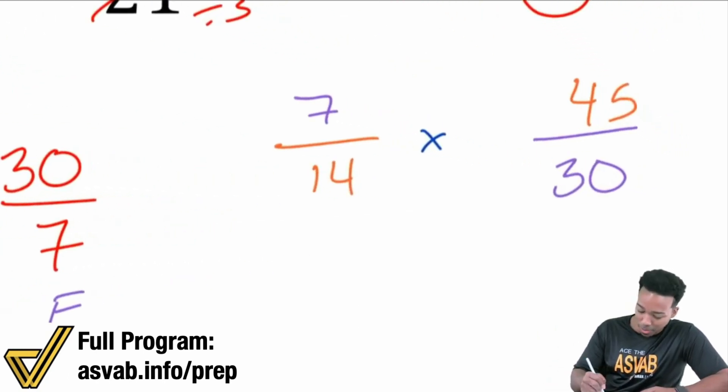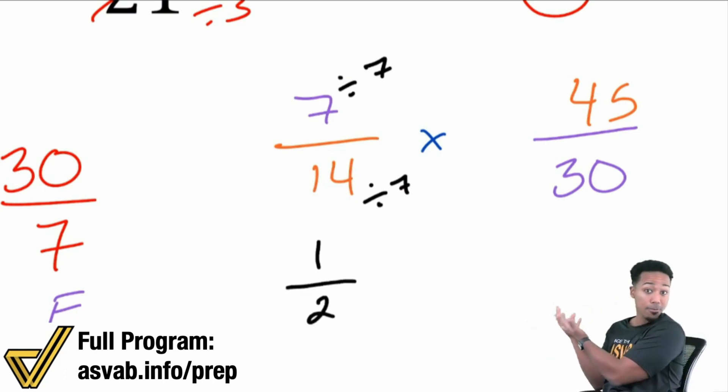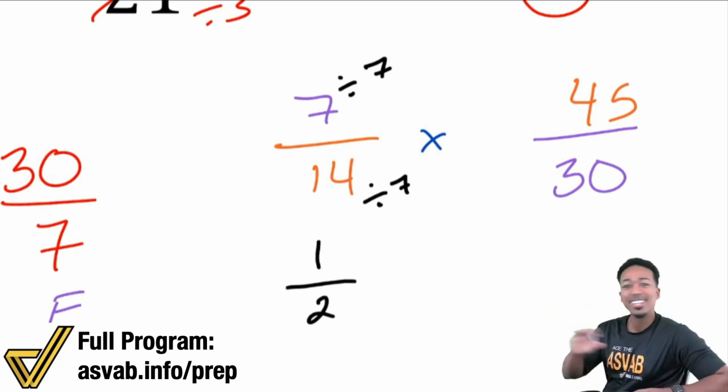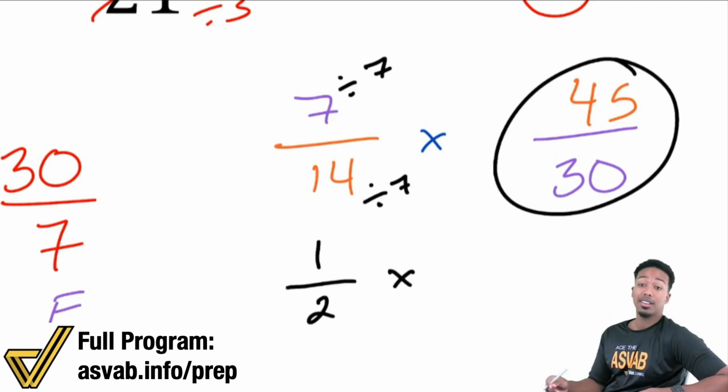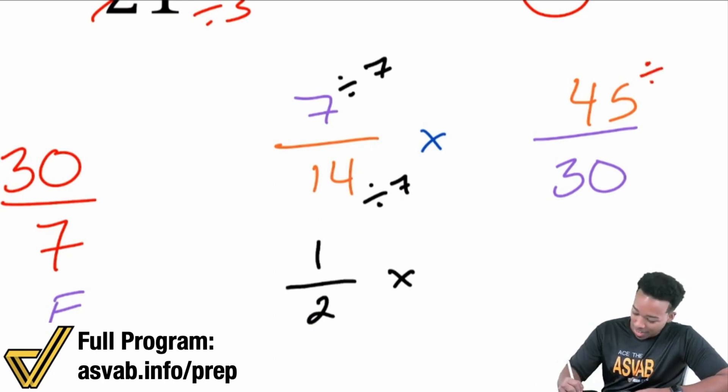So we're going to have 7 over 14. What is that going to simplify to? Remember that they're both divisible by 7. They're both divisible by 7, giving us 7 divided by 7 is 1. 14 divided by 7 is 2. And that's true because 7 is half of 14. So that's really nice right there. Super easy. Then we're multiplying that with what? 45 divided by 30. Nah, we can simplify that because 15 goes into both.